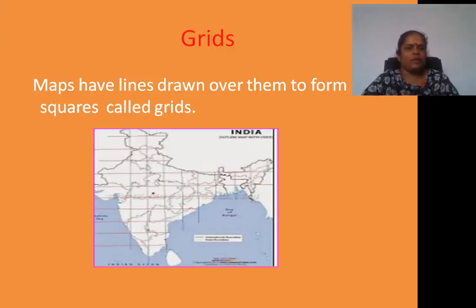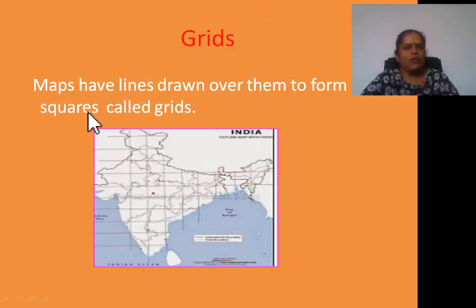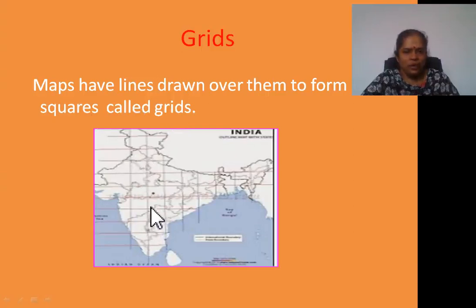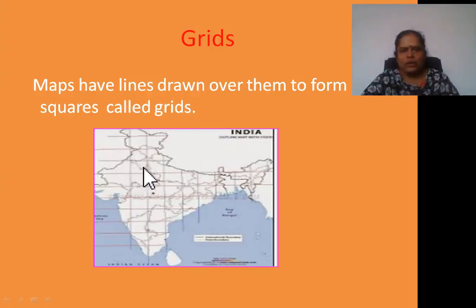Next: grids. Maps have lines drawn over them to form squares called grids. See, look at this map, students — here some grids are there, and these grids are making squares. These are called grids.